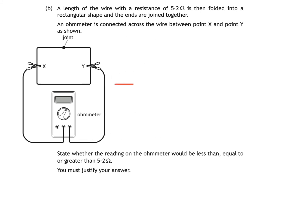So if this is the wire when it's laid out straight it'll basically act like a resistor of resistance 5.2 ohms. When it's folded into that rectangular shape there are now two shorter lengths in parallel and of course the resistance of the wire decreases as length decreases.